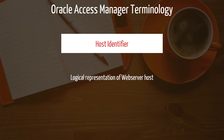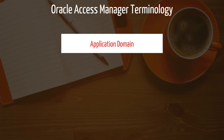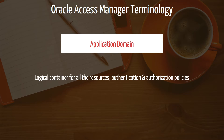Next, we have Host Identifier, which is a logical representation of the web server host. You can create a Host Identifier while registering WebGate with Oracle Access Manager. Next, we have Authentication Scheme, which is basically the method of authentication — it also defines the level of authentication and underlying authentication modules. Next, we have Application Domain, which is a logical container of all resources, authentication and authorization policies. Application domains can be created based on business needs, like location-based or business unit-based, such as an HR application domain or finance application domain.